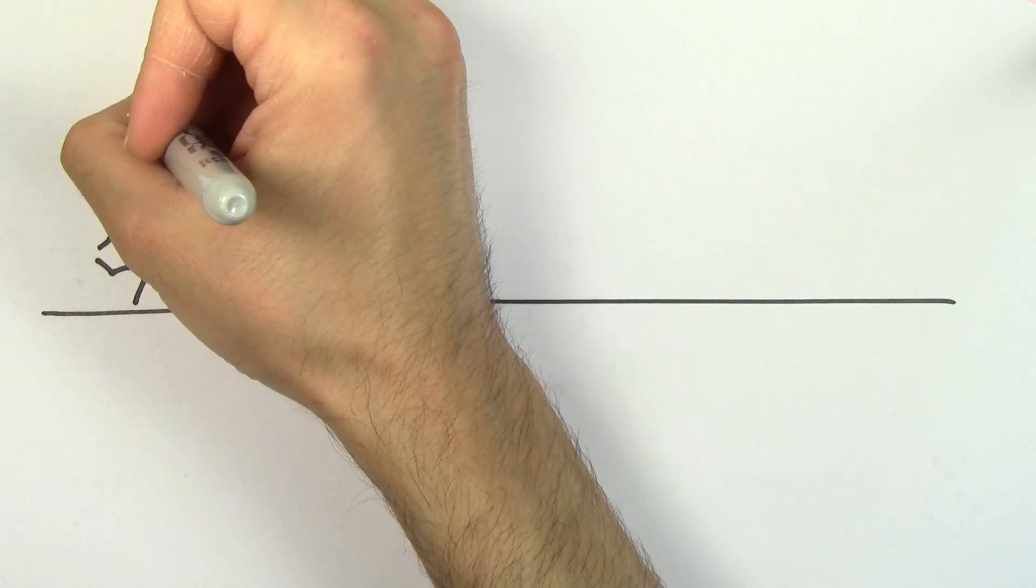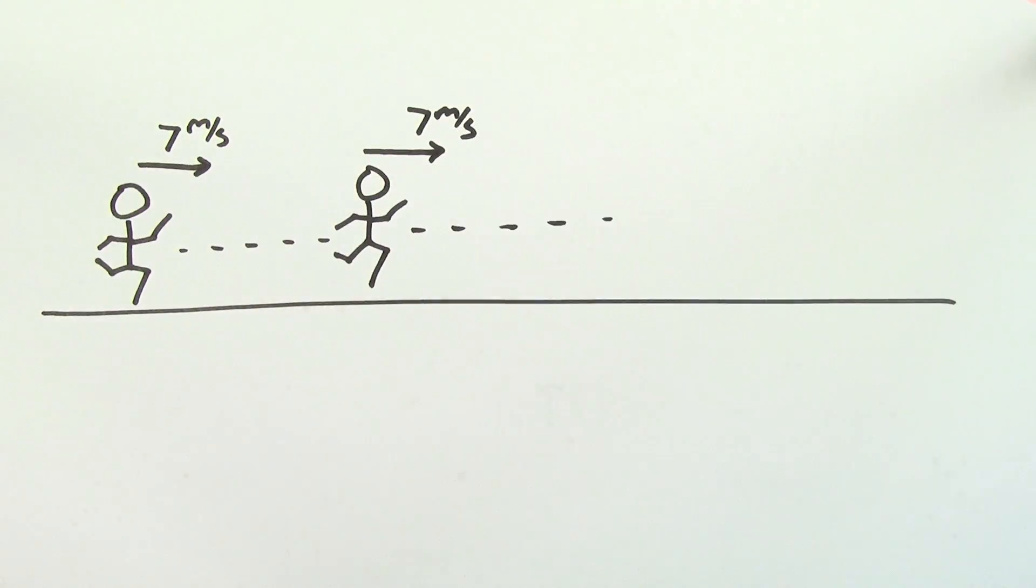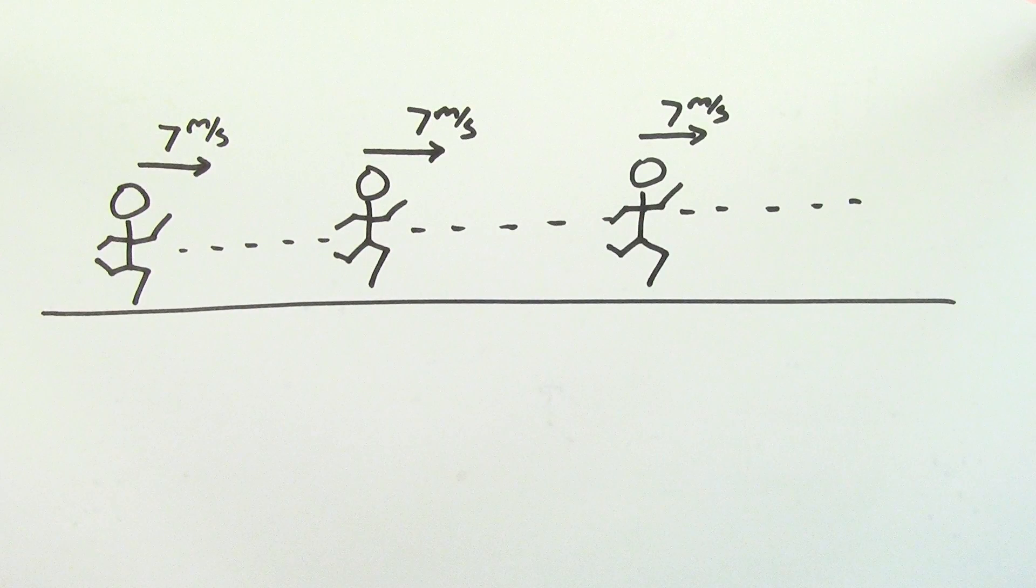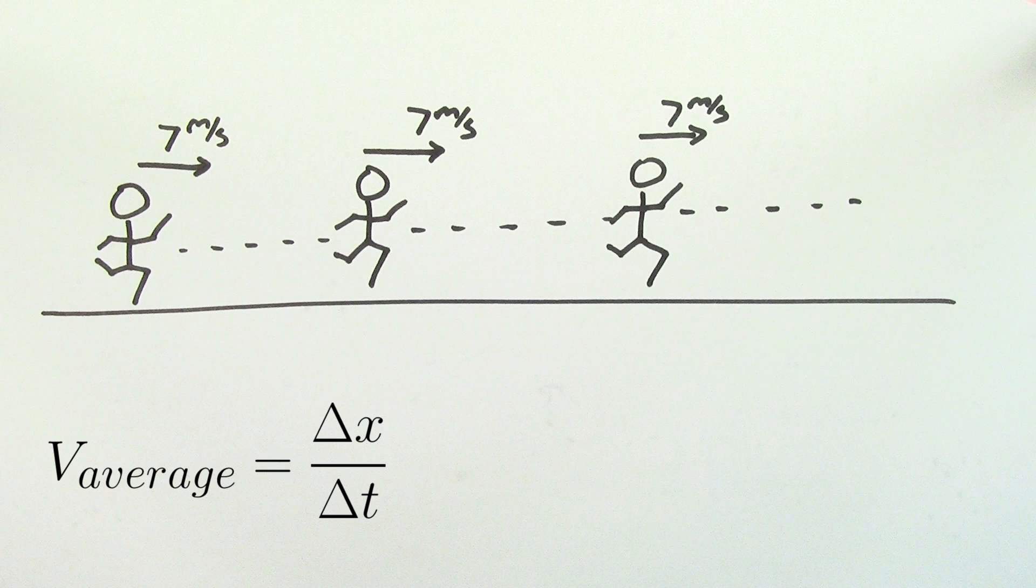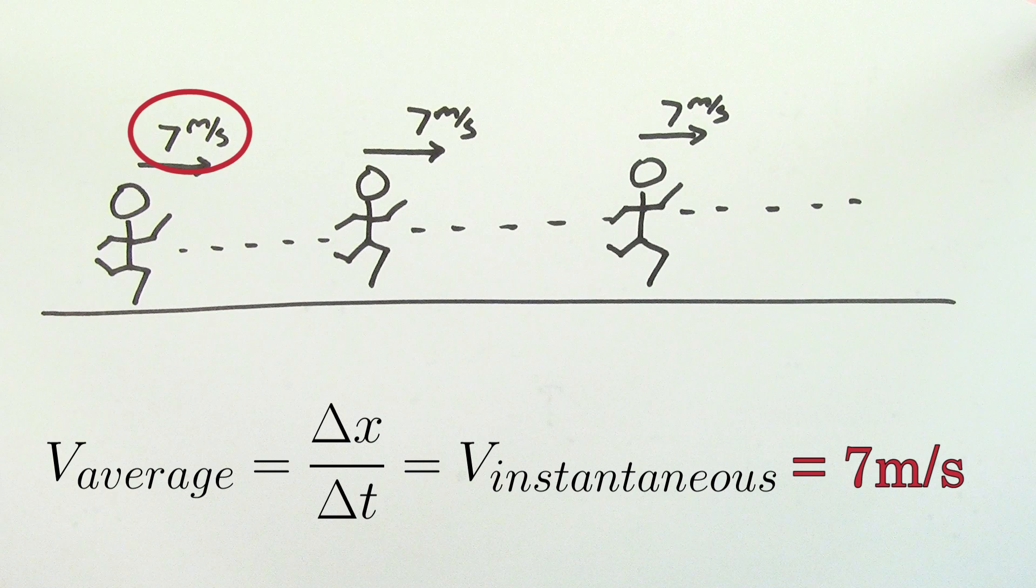The first way is so simple that it's kind of obvious. If you're lucky enough to have a case where the velocity of an object doesn't change, then the formula for average velocity is just going to give you the same number as the instantaneous velocity at any point in time.